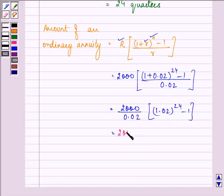Now on solving we have 2000 into 100 upon 2, and its value is given to us in the question as 1.608.